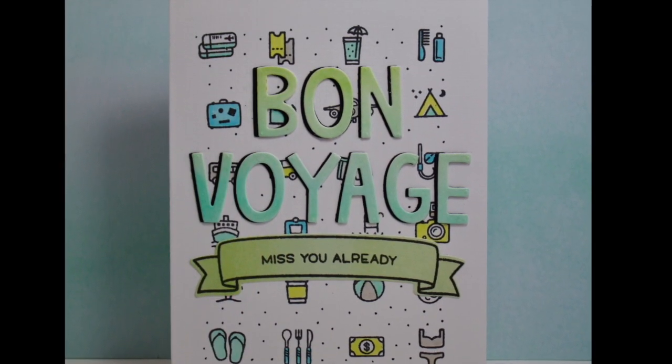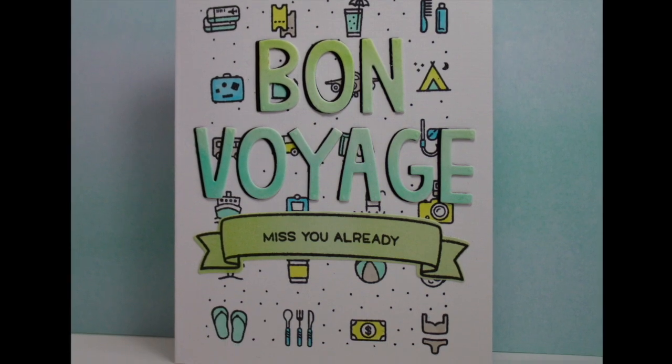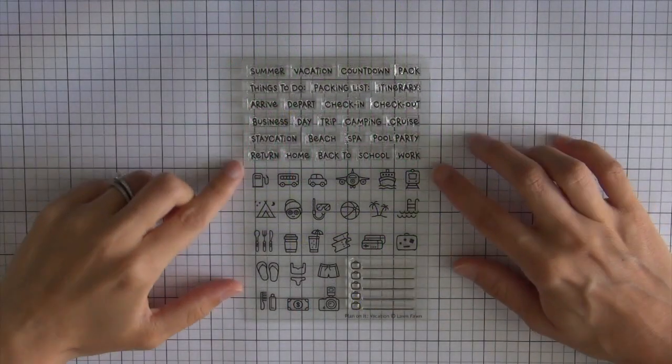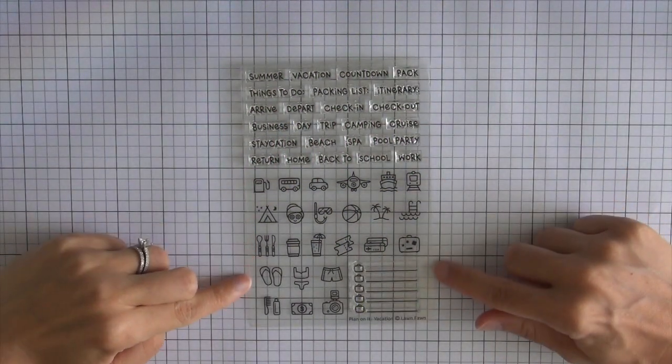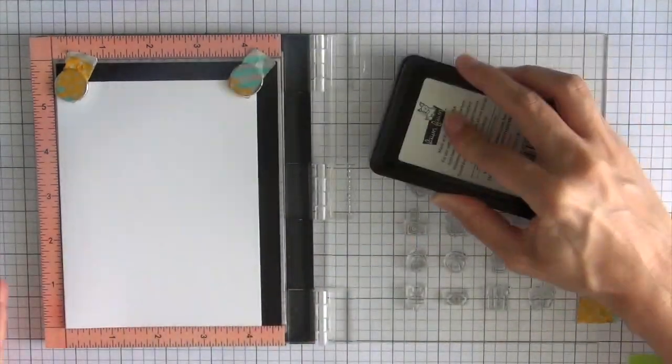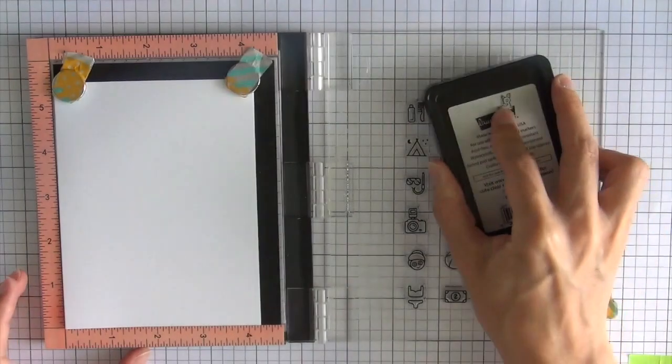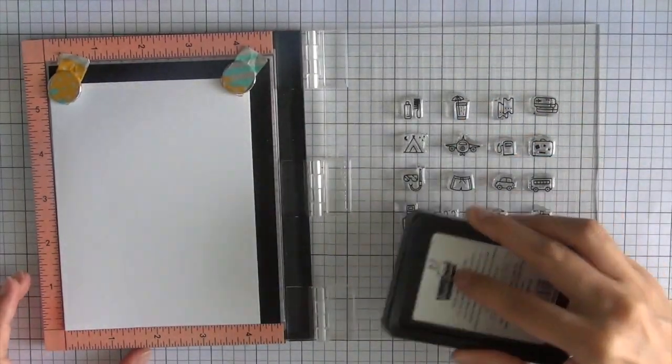Hi everyone, this is Lizzie, and today I'm going to share with you how to make this super cute farewell card. I'll be using one of the new Plan On It stamp sets, the vacation version. It has a ton of really cute images which are perfect for your planner and vacation, but I also love these small images for making backgrounds for cards. So that's what we're going to do today.